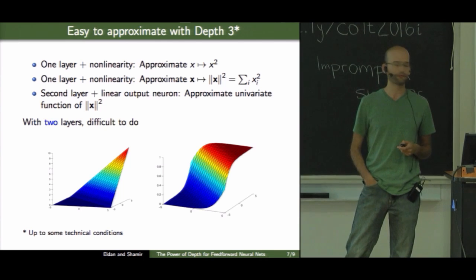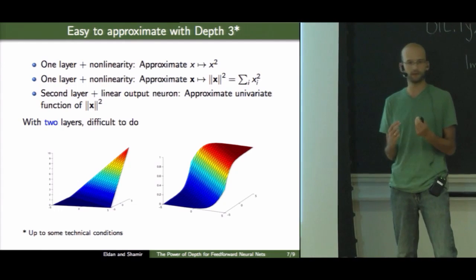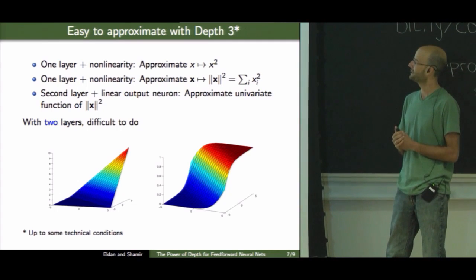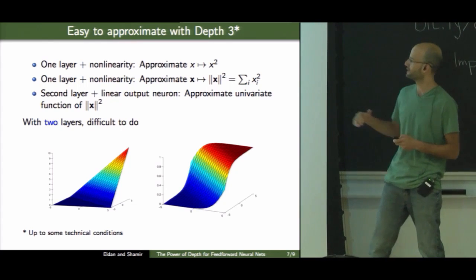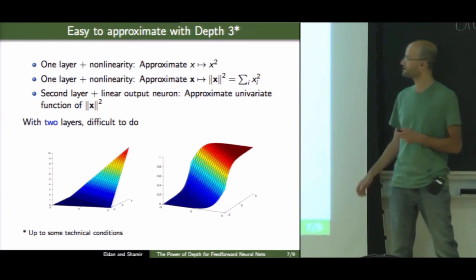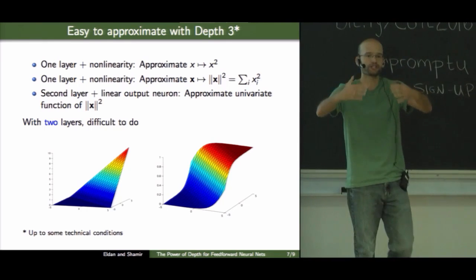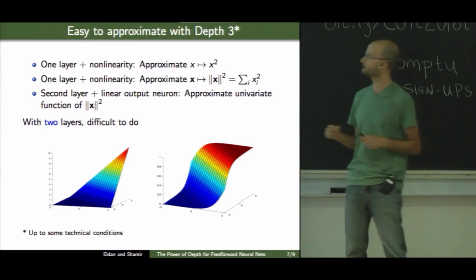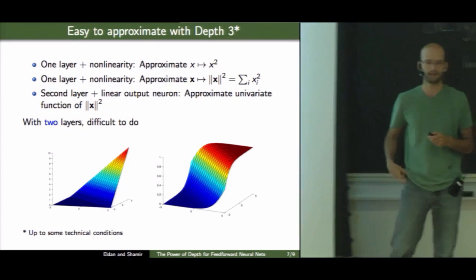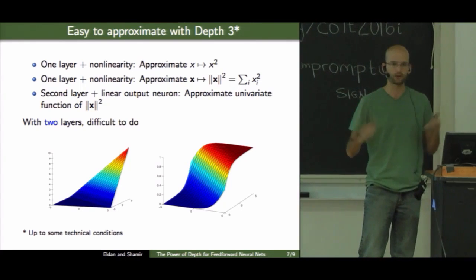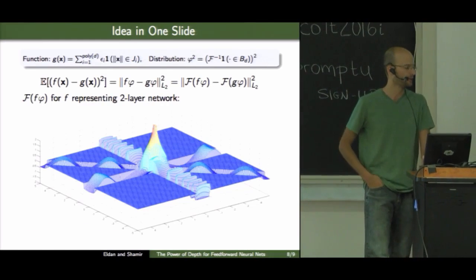On the other hand, if I'm forcing myself to use just two layers, intuitively, this would be kind of difficult to do because a two-layer network is a linear combination of functions which look like this. If I use a sigmoid or a relu, and if I have a radial function which changes in some way in all directions, intuitively, it would be hard to capture it in high dimensions using functions of this form. Of course, this is just hand-waving intuition to explain a little bit the more formal proof idea.